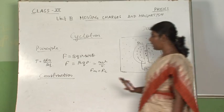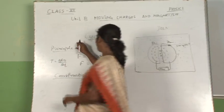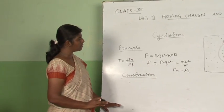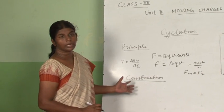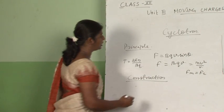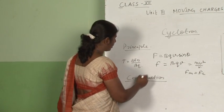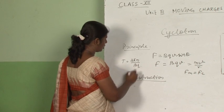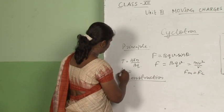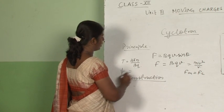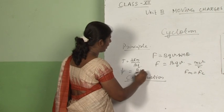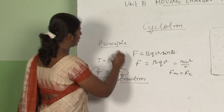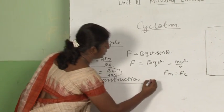The full assembly is kept inside a vacuum chamber so that collisions with air and other particles do not affect the charged particle. The time period T equals 2πM by BQ, so frequency equals BQ by 2πM — this is called the cyclotron frequency.